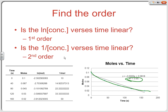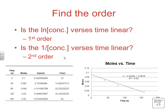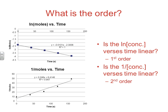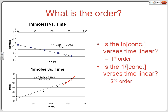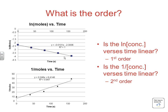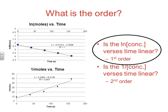Next we look at the natural log versus time and the inverse versus time graphs. The bottom graph — inverse moles versus time — looks curved, like the first one. But in the middle graph, the natural log versus time, the R-squared is dead on 1. The R-squared for the reciprocal is 0.947. The one closest to 1 is our linear relationship, so it's the ln of concentration versus time that's linear — confirming it's first order.